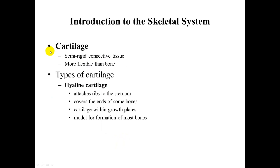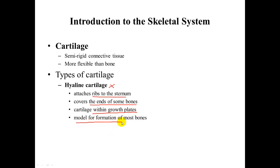Cartilage is a semi-rigid connective tissue that is more flexible and compressible than bone. The base type is hyaline cartilage. You find it attaching ribs to the sternum, as articular cartilage at the ends of some bones, within growth plates or epiphyseal plates, and it also serves as the base model for the formation of most bones.